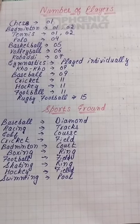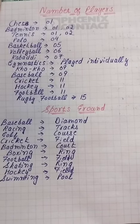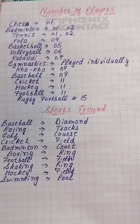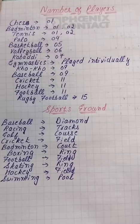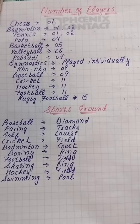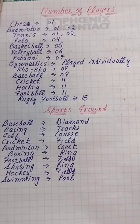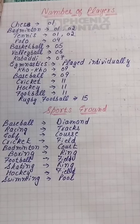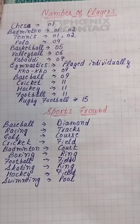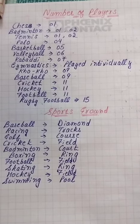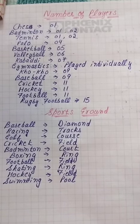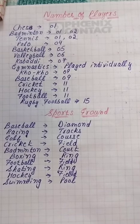Badminton is played both single and double. Tennis is also same like badminton — it is played both single and double. Polo has four players. Basketball has five players.